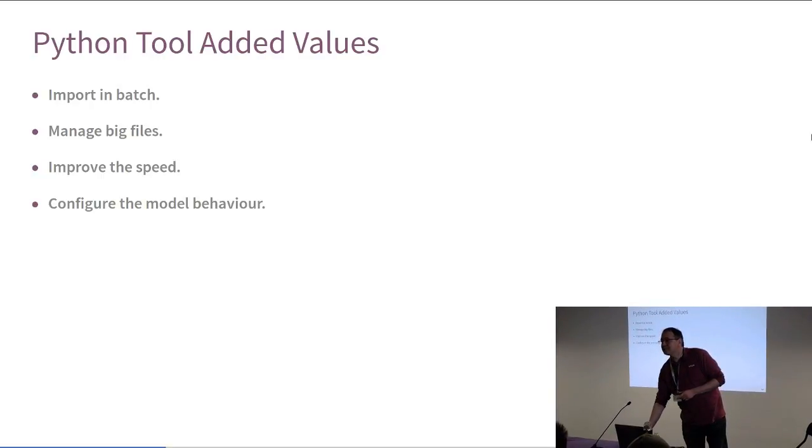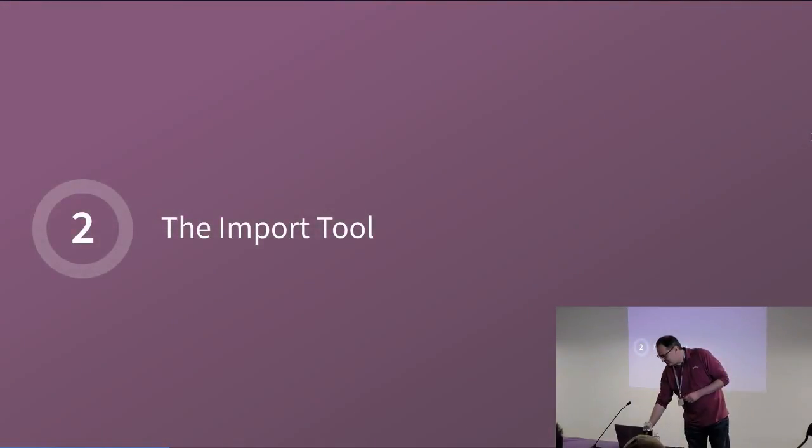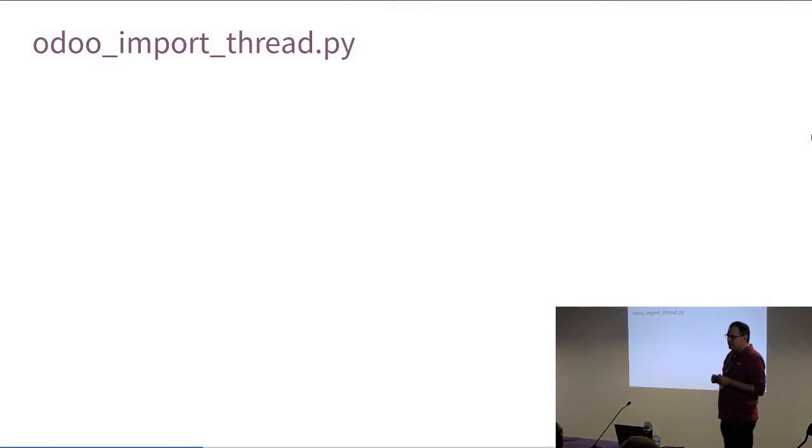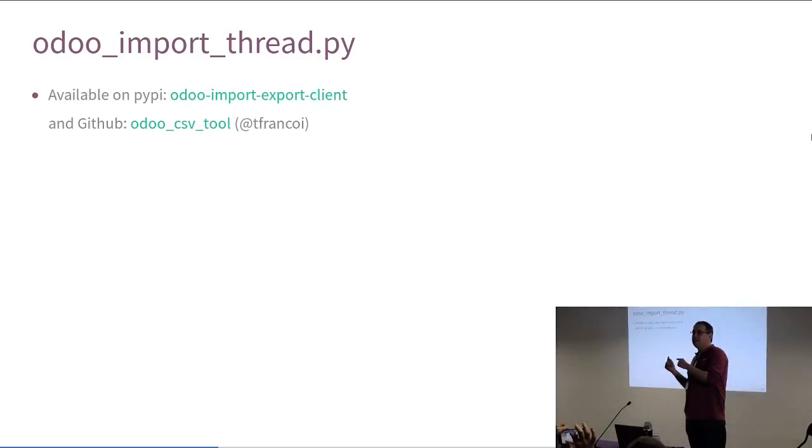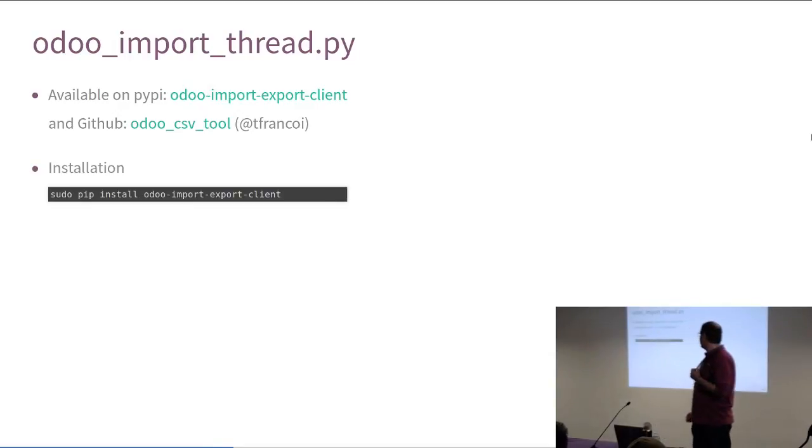So let's introduce the tool by itself. The tool is odoo_import_thread.py. It is available on PyPI. So you can install it by making a pip install odoo-import-export-client. And it's also available on GitHub under the repository odoo-csv-tools of Thibault Francois, who is the author of the tool. He's one of our team leaders who makes the pleasure to be among us today. Thank you, Thibault. So to install it, you should use the command pip install odoo-import-export-client or you clone the repository. And you have it.